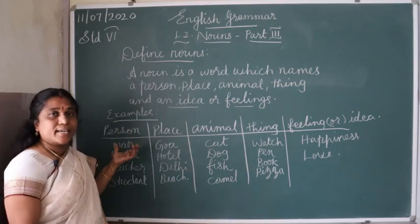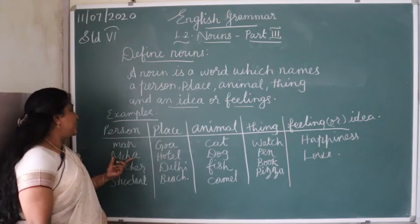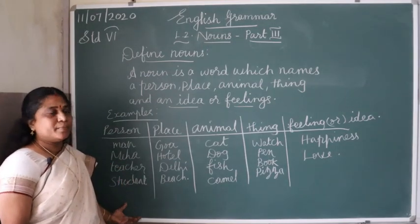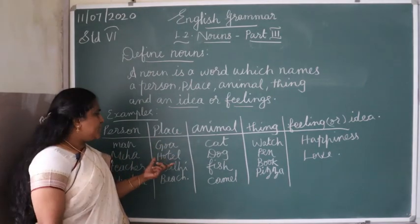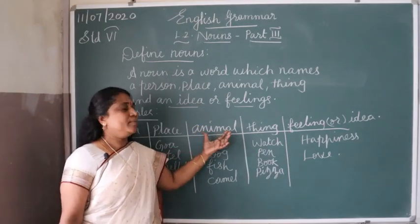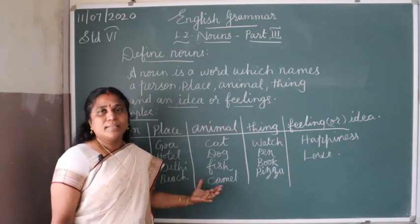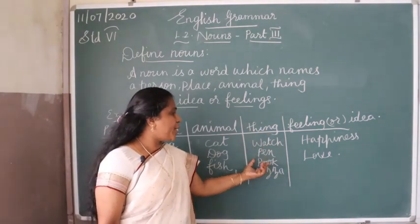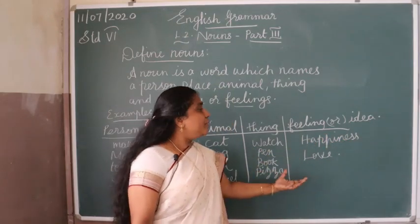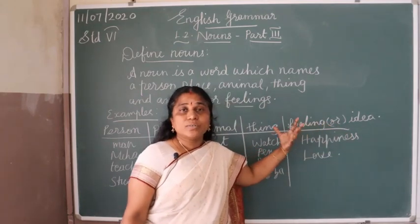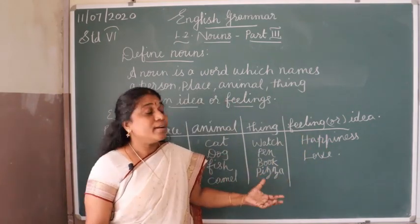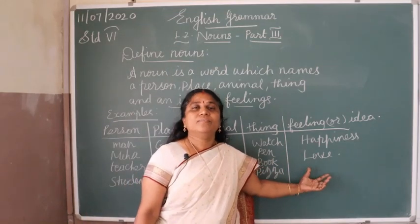For person, we mean anybody — man, Meha, teacher, student, doctor — they are all persons, meaning people. For place, any place — Goa, hotel, Delhi, or a beach. For animal: cat, dog, fish, camel — these are the naming words for animals. For thing: watch, pen, book, pizza. And for feeling or idea — happiness and love — we cannot touch them, but we can feel them.